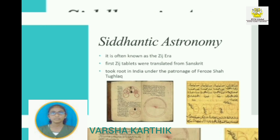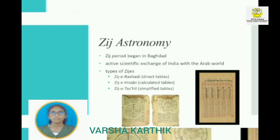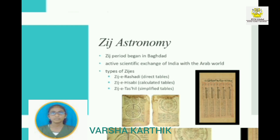The first Zij table was translated from Sanskrit and included the number zero among the Indian number system. There are different types of Zij tables: Zij al-Sindhind, a calculator table; and Zij al-Ilish, a simplified table.